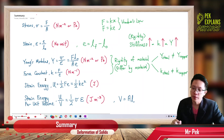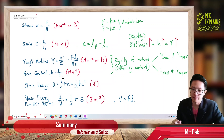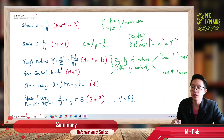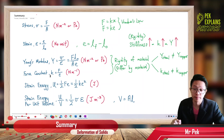And force constant: force constant K is force over elongation. This formula comes from Hooke's Law. The force constant is force over elongation — Newton divided by meter — so the unit is Newton per meter.